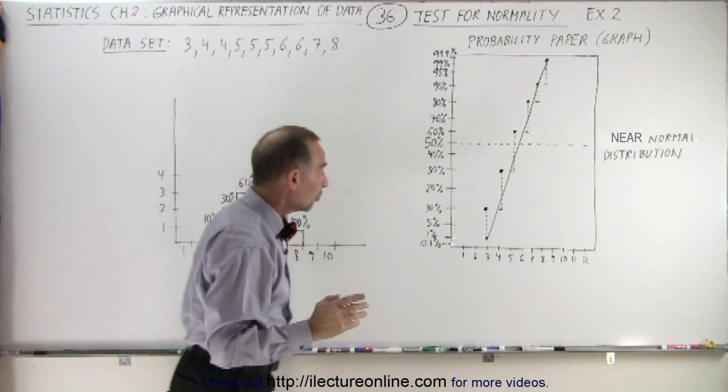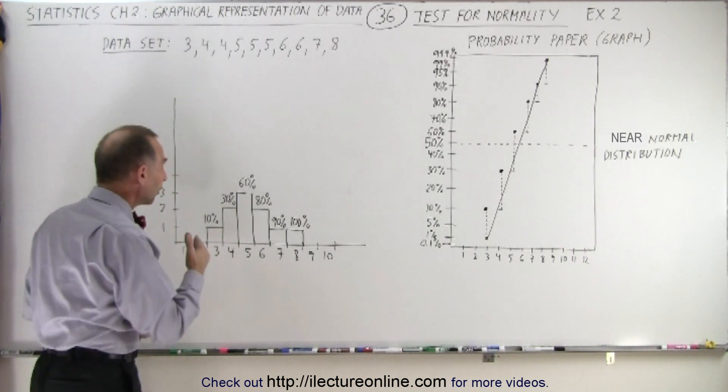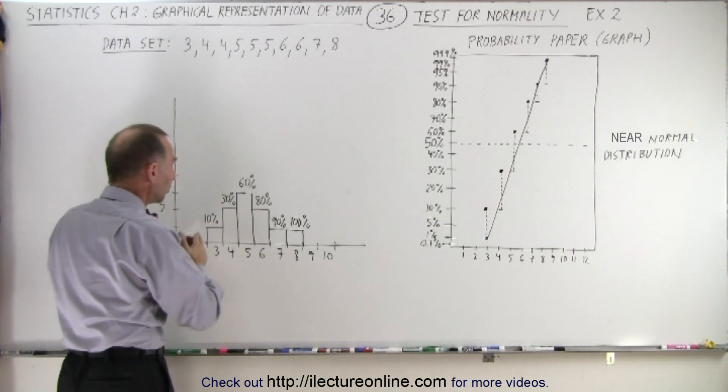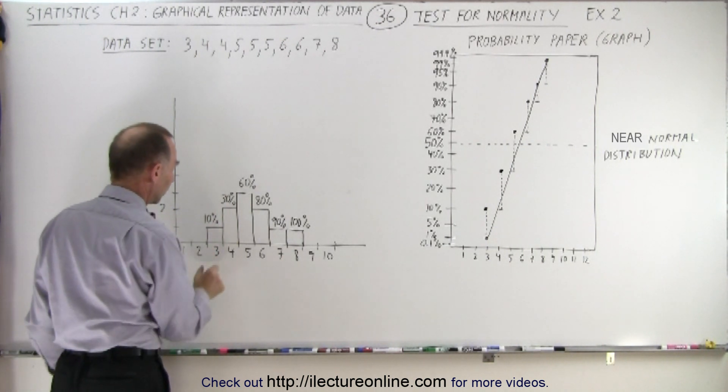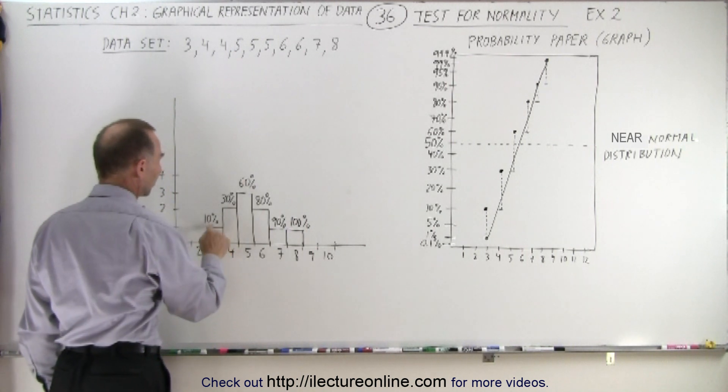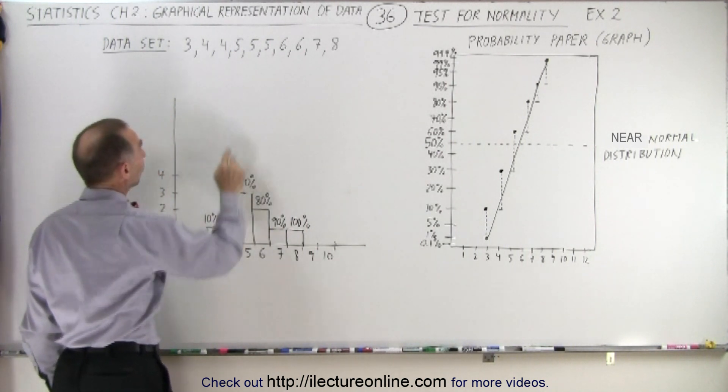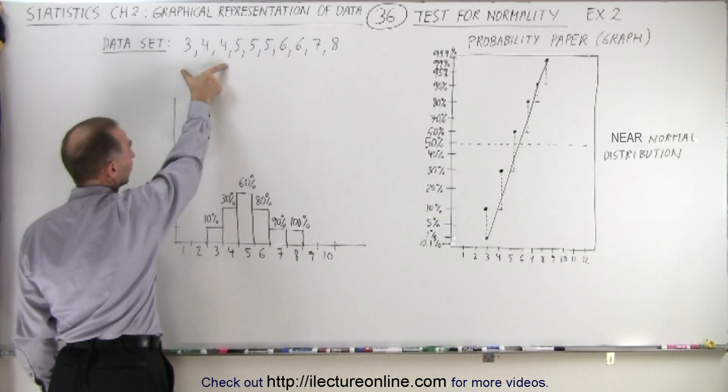Then you calculate what we call the cumulative value—what percent or fraction of data points you have when you get to a certain data point. Since we have one number 3, that's 10% of the total set. The number 4 occurs twice, so with the 3s and 4s you have 30% of your data set.